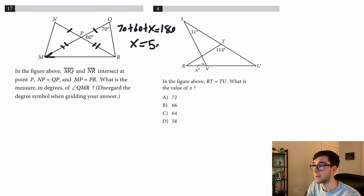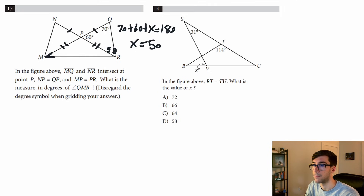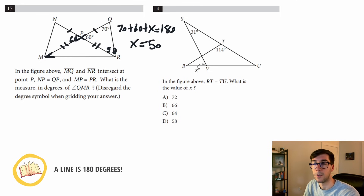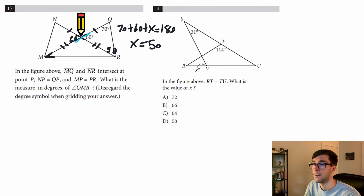We get x equals 50, so that angle is 50. The next rule is about vertical angles — when two lines intersect, the angles across from each other are equal. So if this angle is 60, the vertical angle is also 60. Next, straight lines add up to 180 degrees. We have 60 here, so 180 minus 60 gives us 120. And again, vertical angles: if this is 120, the angle across is also 120.